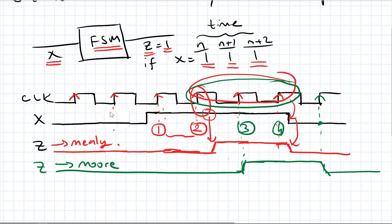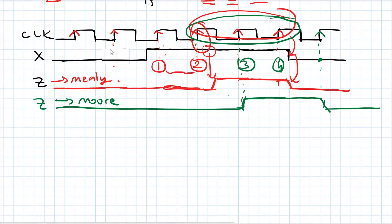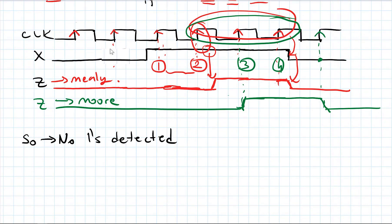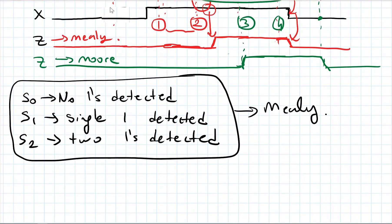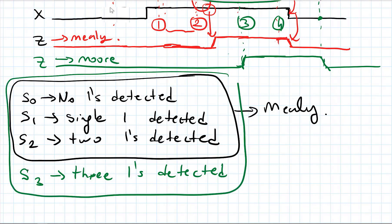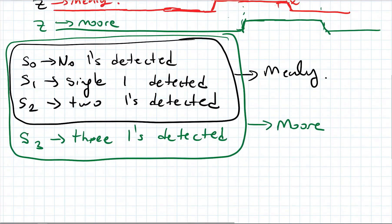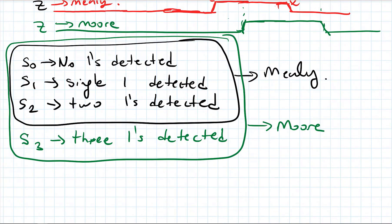Let's do the state diagram — it will be easier to understand. I have an S0 state. S0 is no ones detected. S1 is a single one detected. S2 is two ones detected. If it is a Mealy, S0, S1, and S2 are enough. But if I had a Moore, I would need another state — S3 — because I need a state that detects 3 ones. So Moore has one more state. But we will be designing this in Mealy.